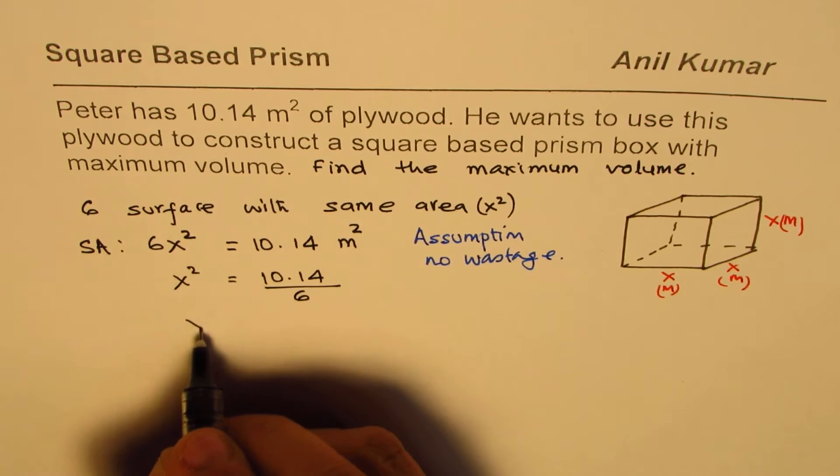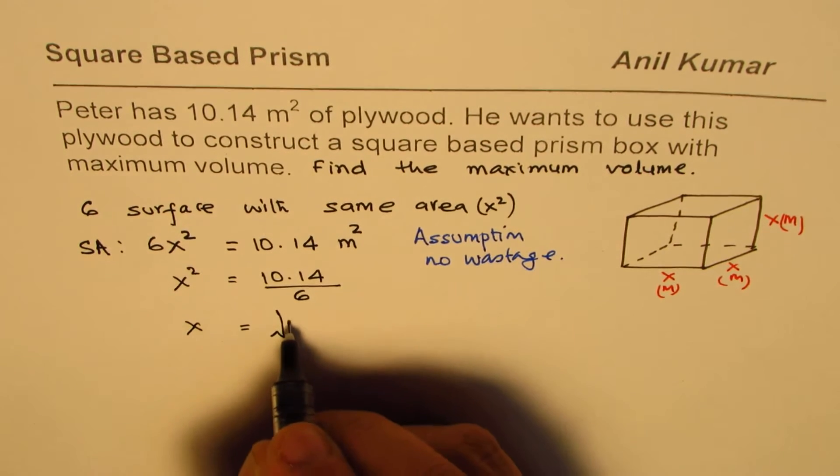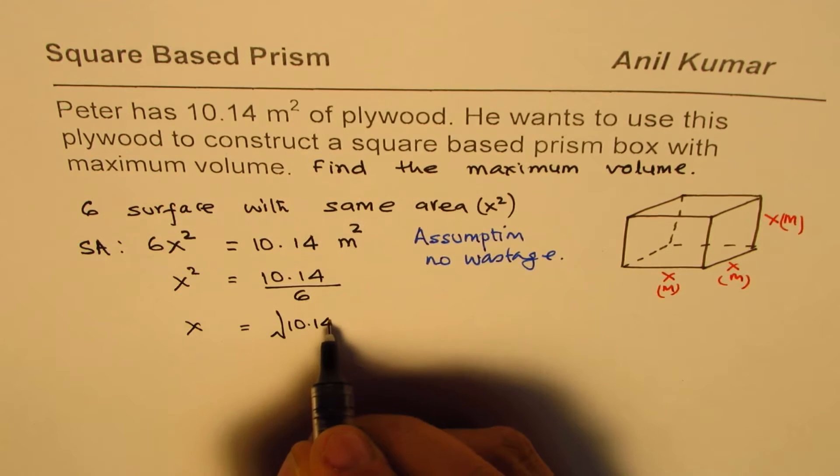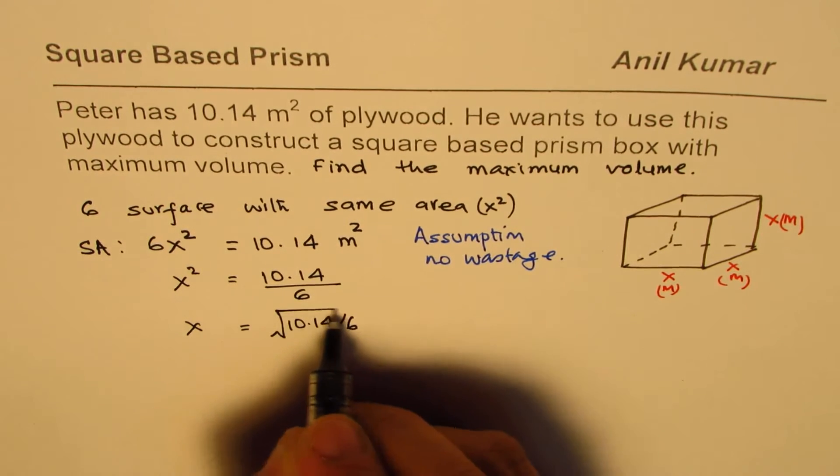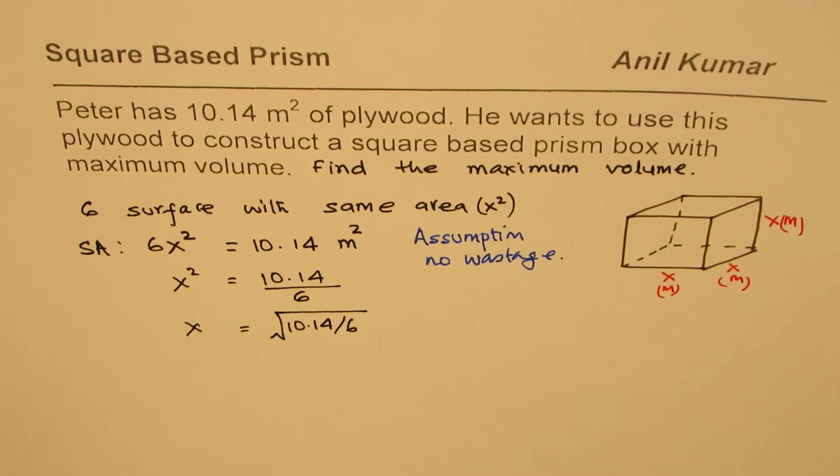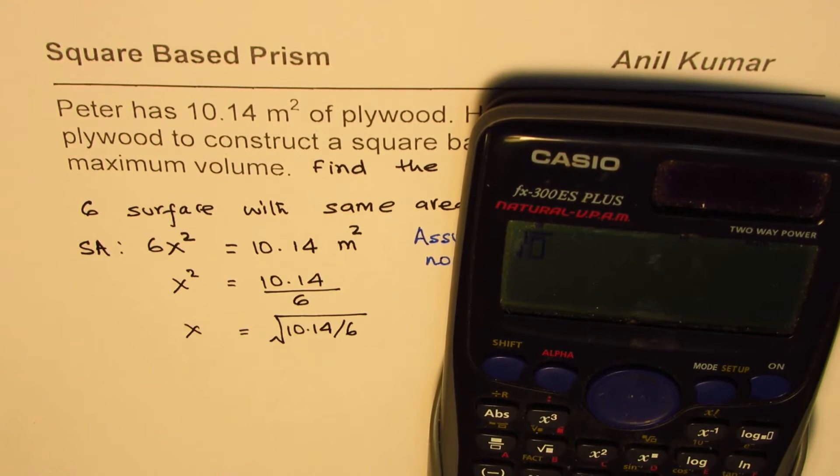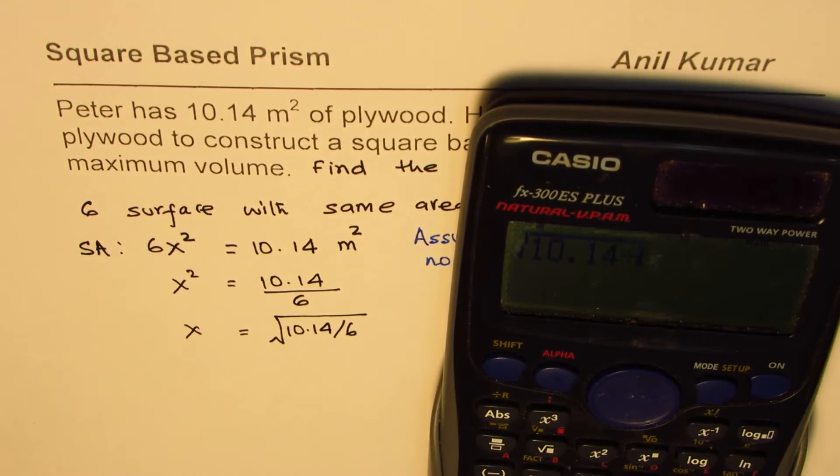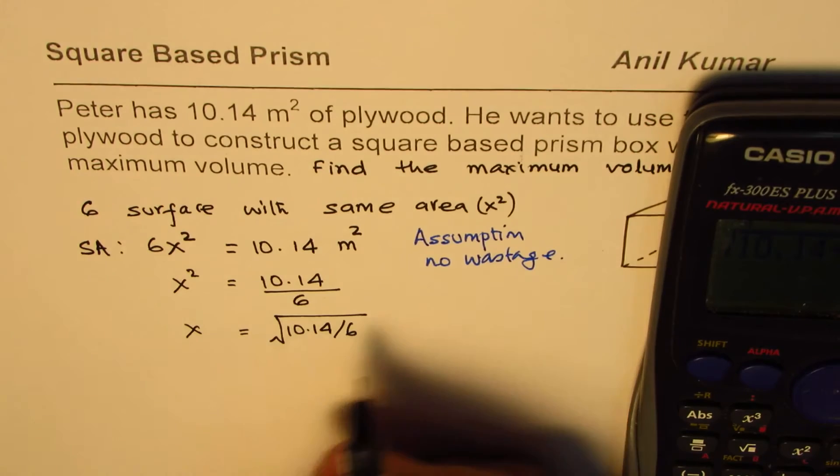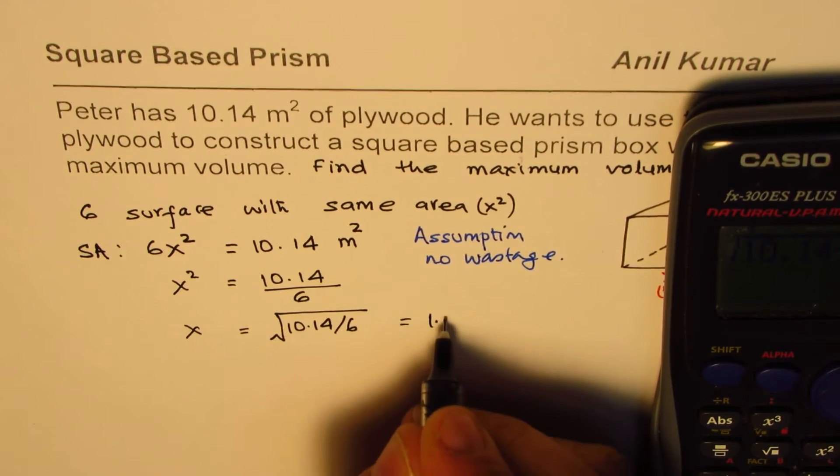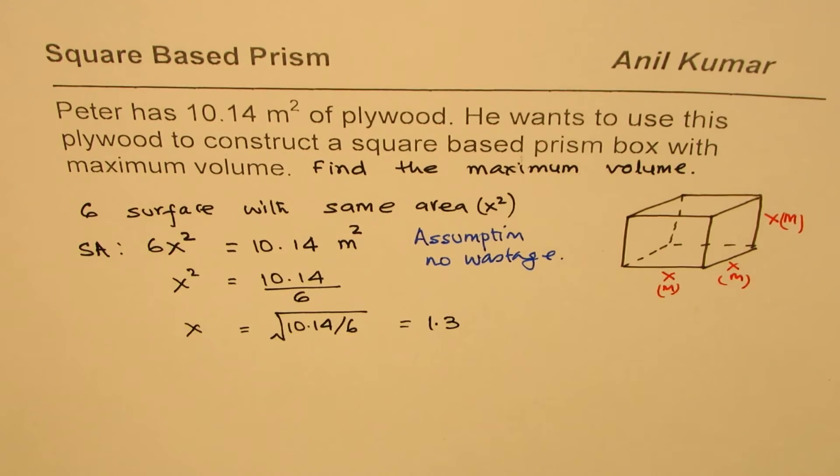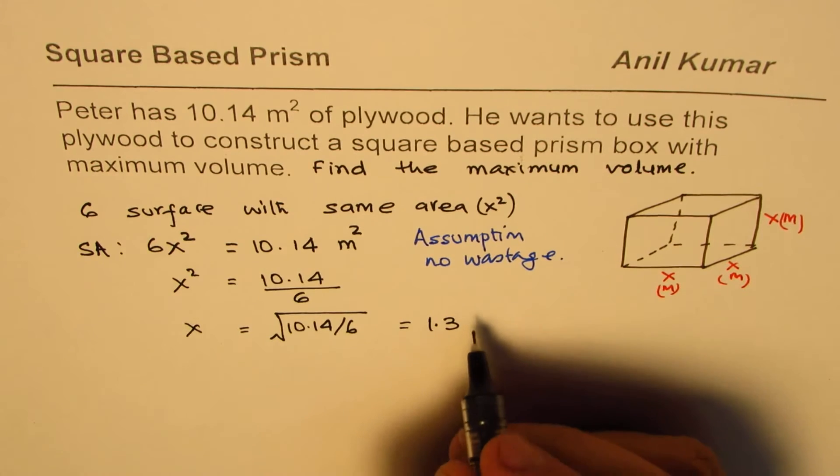X is equal to the square root of 10.14 divided by 6. Let's calculate this value: square root of 10.14 divided by 6, and that is equal to 1.3 in decimals. So we get 1.3 as the value of X, and the units are meters.